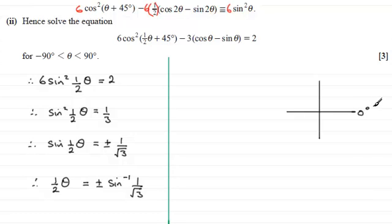then I'm looking for where sine is going to be plus or minus. And I know that θ must lie between -90° and 90°. So ½θ must lie between -45° and 45°. That means it's got to lie in the first quadrant or the fourth quadrant.